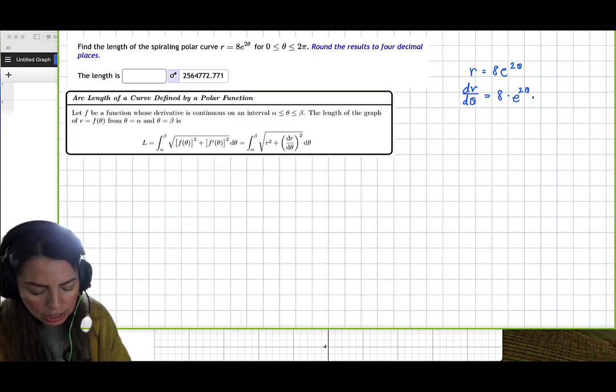times chain rule, the exponent times 2. So we get 16 e to the 2 theta.